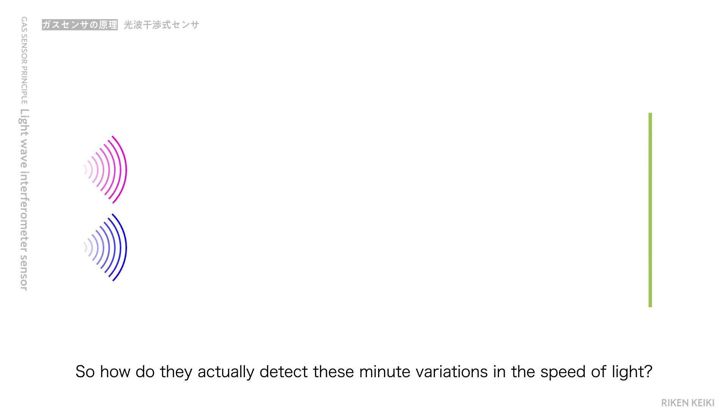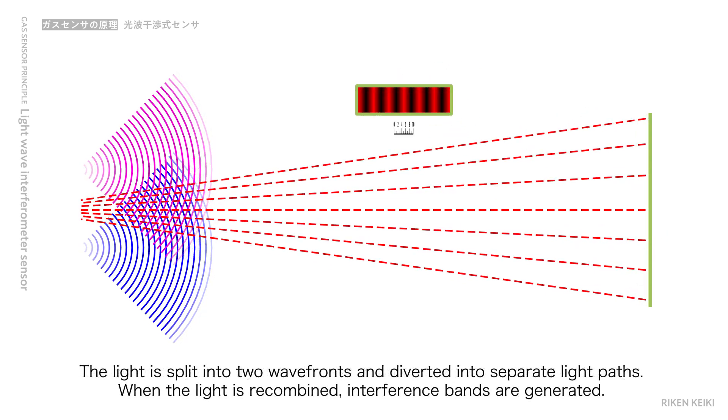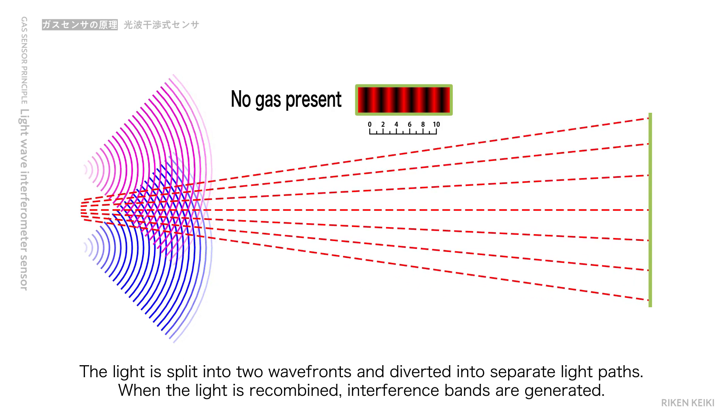So, how do they actually detect these minute variations in the speed of light? Light is spread into two wave fronts and divided into separate light paths. When the light is recombined, interference fans are generated.